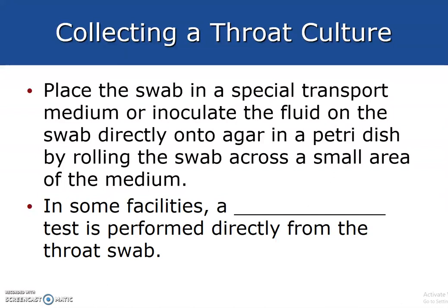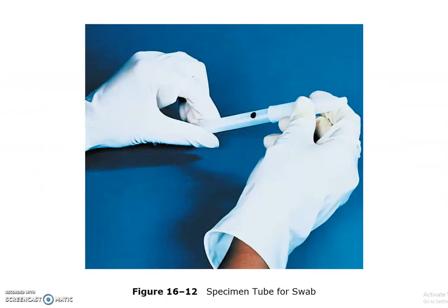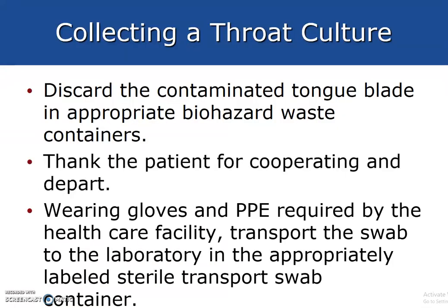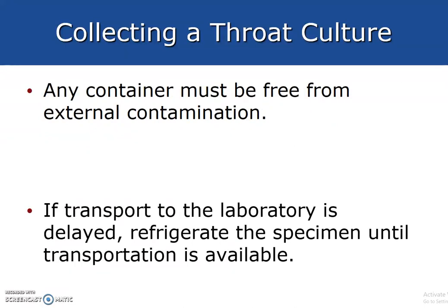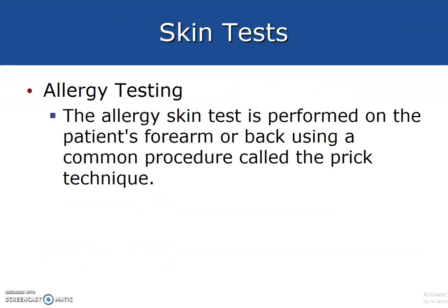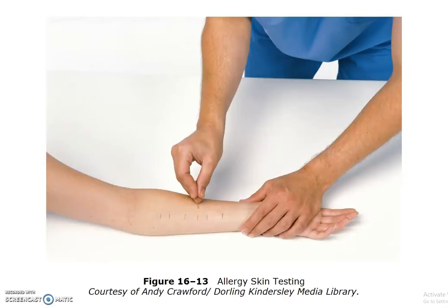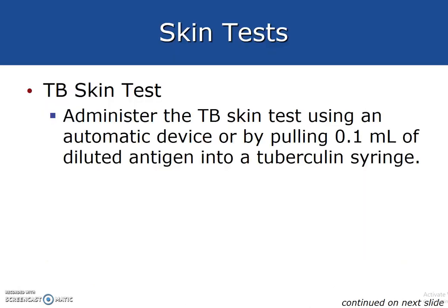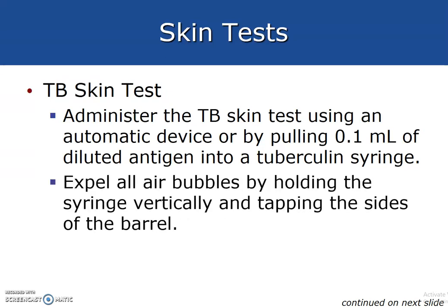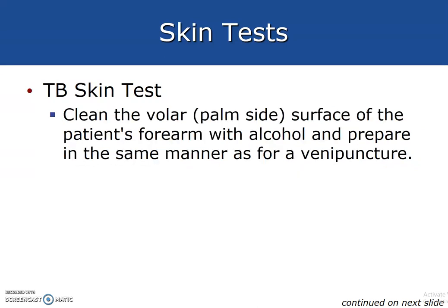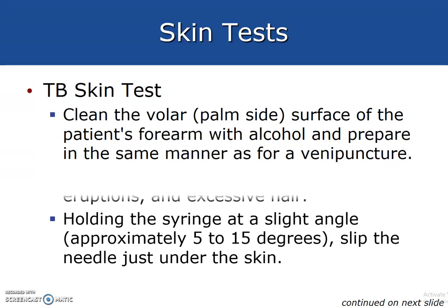In some facilities, a rapid test is performed directly from the throat swab. Skin and allergy tests are performed on the patient's forearm or back using a common procedure called the prick technique. We do not perform these as phlebotomists, but be aware this is something we might encounter in the lab, especially alongside a blood test for allergy determination. TB skin tests are administered using an automatic device injecting 0.1 mL of a diluted antigen. We also now have the TB QuantiFERON Gold test, which phlebotomists would need to perform.